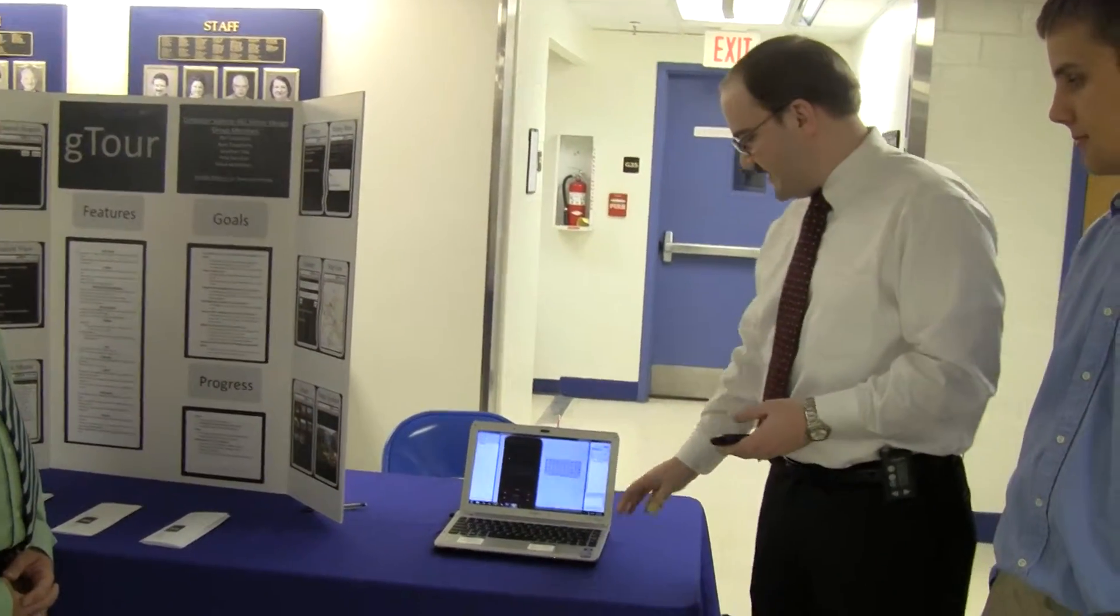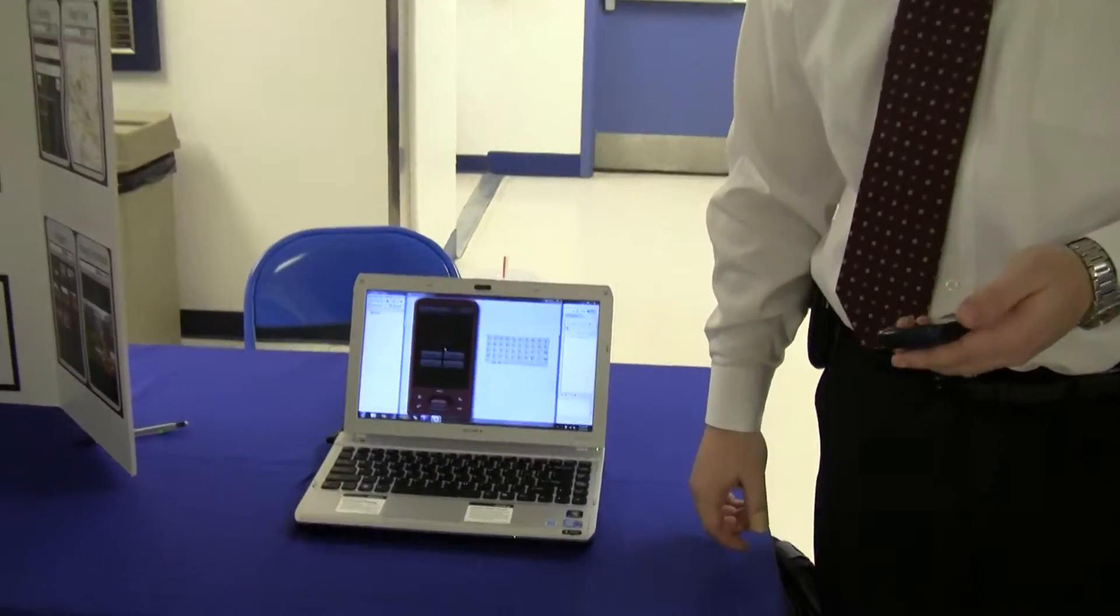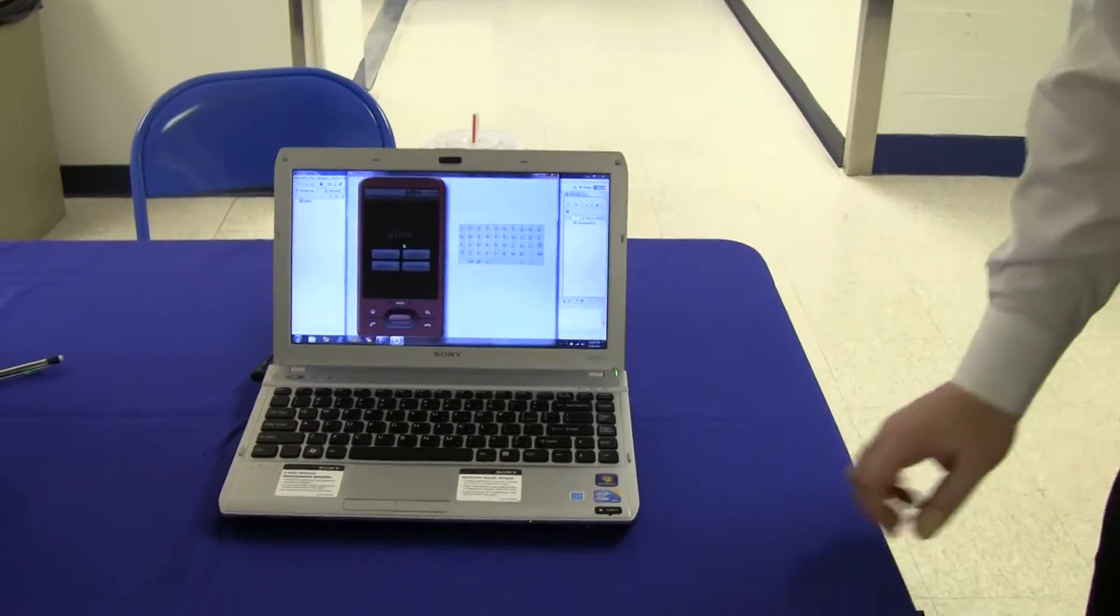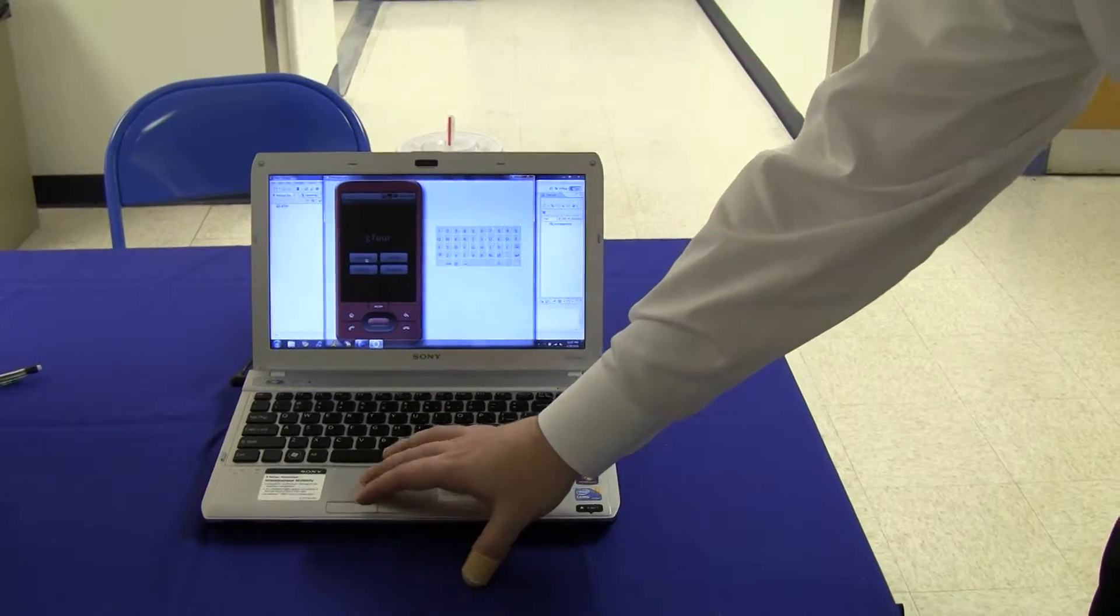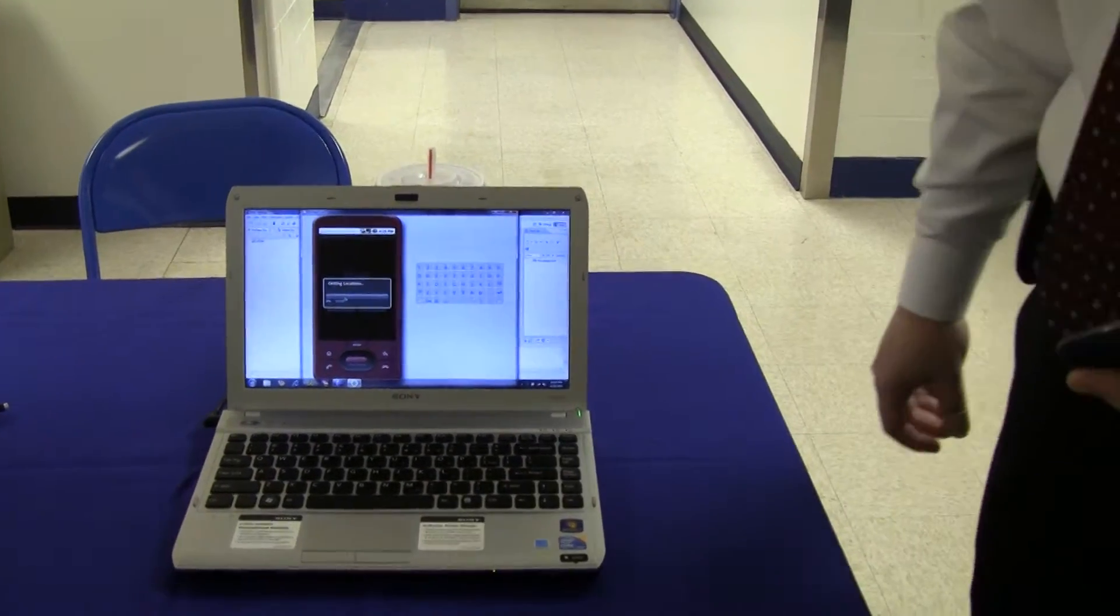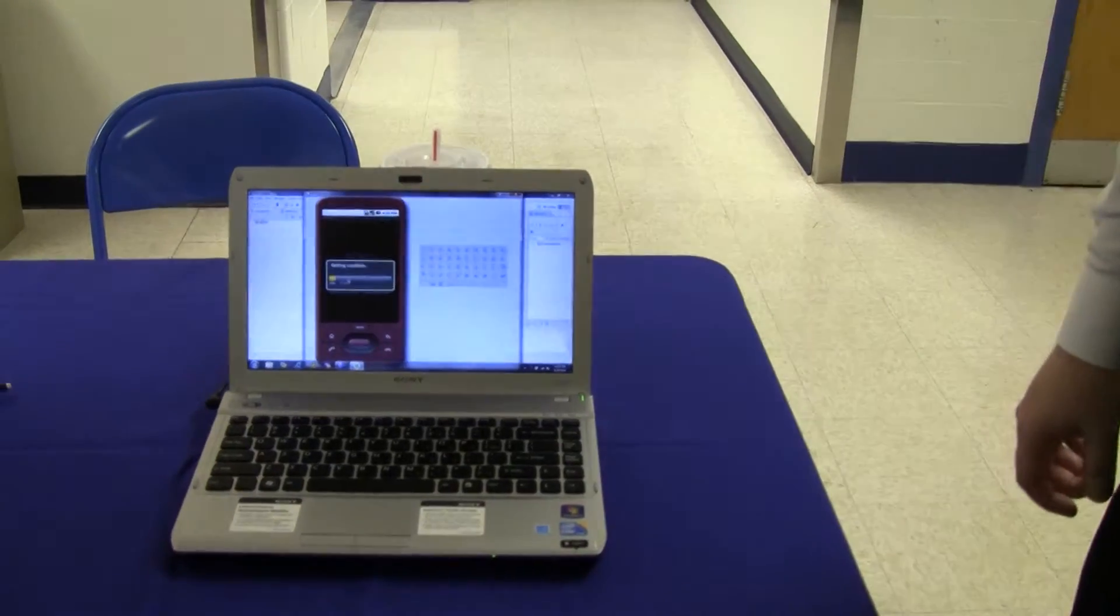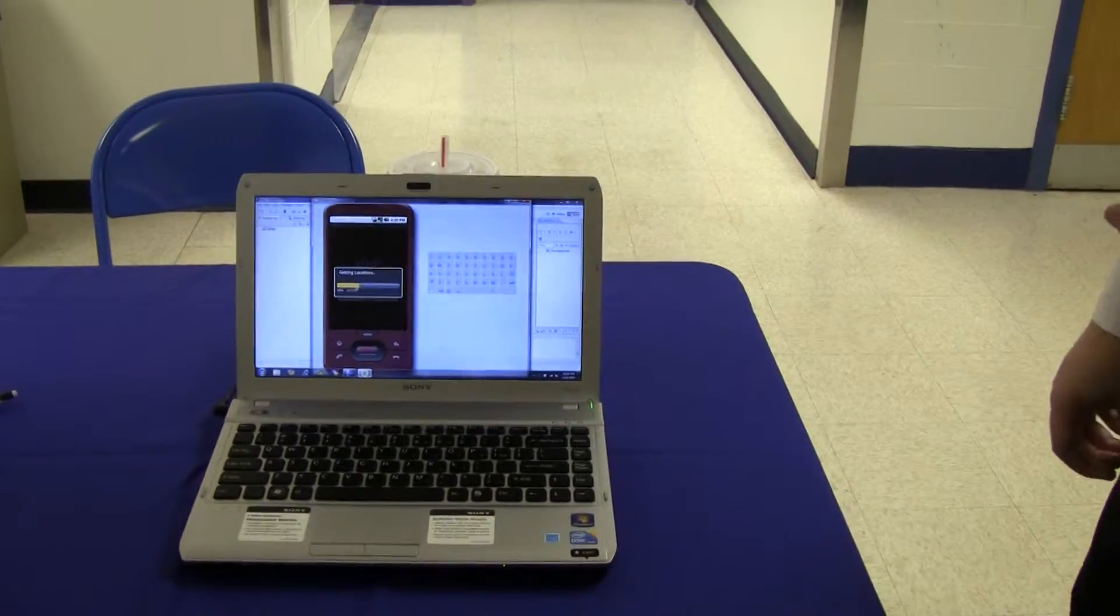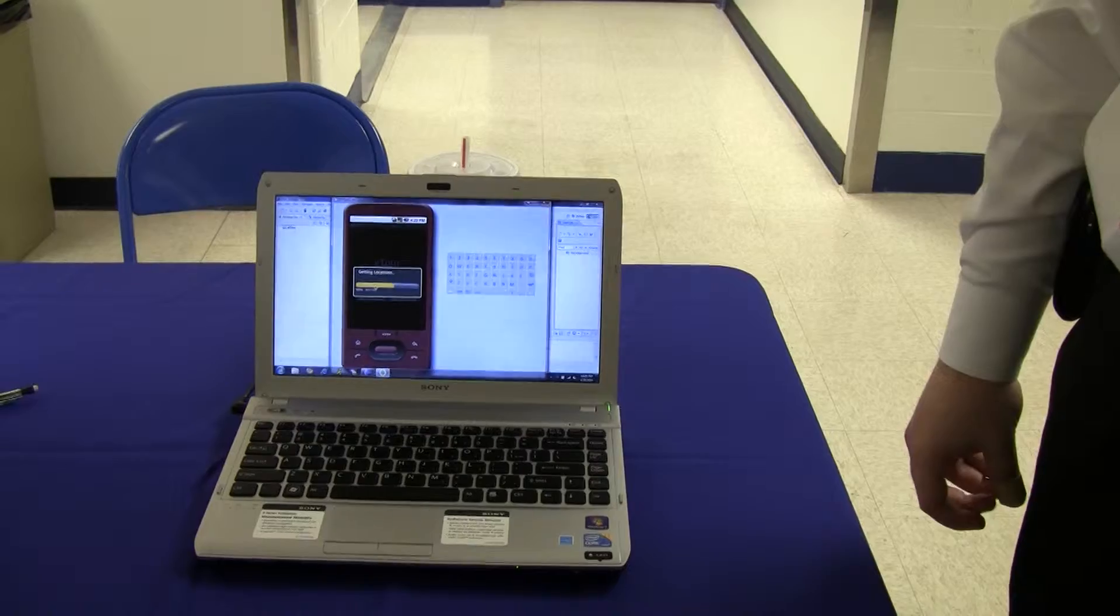I'm going to show you part of the application on the laptop screen here because we do not have a GPS chip in the phone that we have. So for Locate Me, it uses the GPS coordinates of your current location. It goes out on the web and populates a list of locations that are in your area.